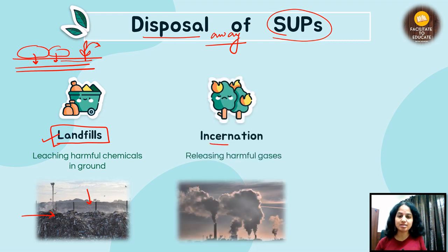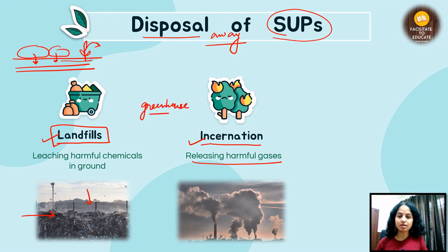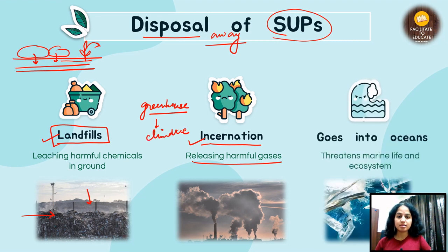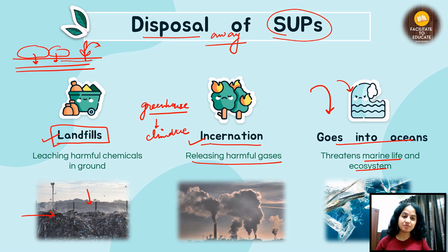Next is incineration — burning plastic in large machines releases harmful gases, including greenhouse gases, which we discussed. This ultimately contributes to climate change, which is a huge problem. The third problem is that plastic goes into the oceans, threatening marine life and the ecosystem — fish and many animals are getting plastic in the oceans and ultimately our ecosystem is being damaged.